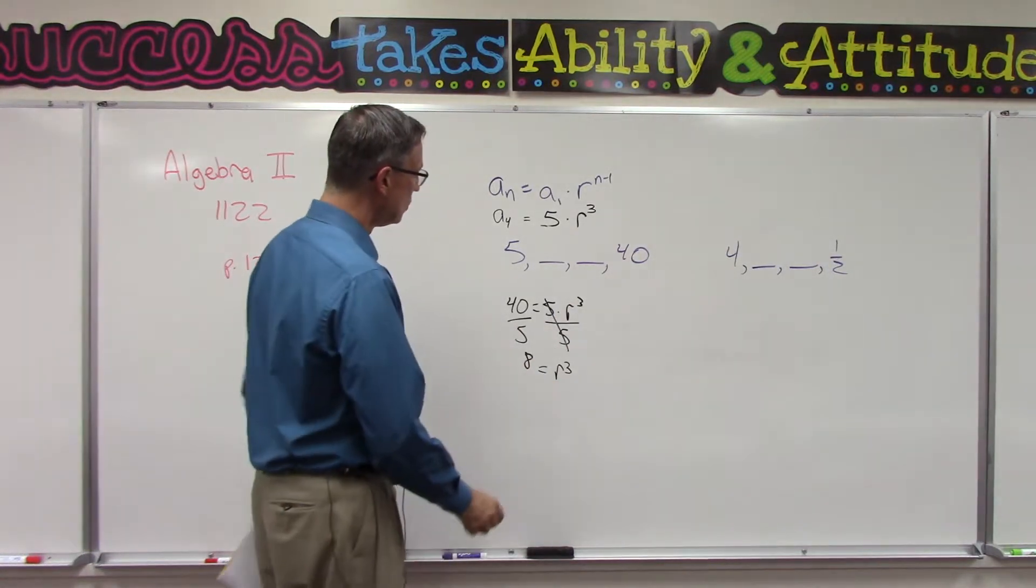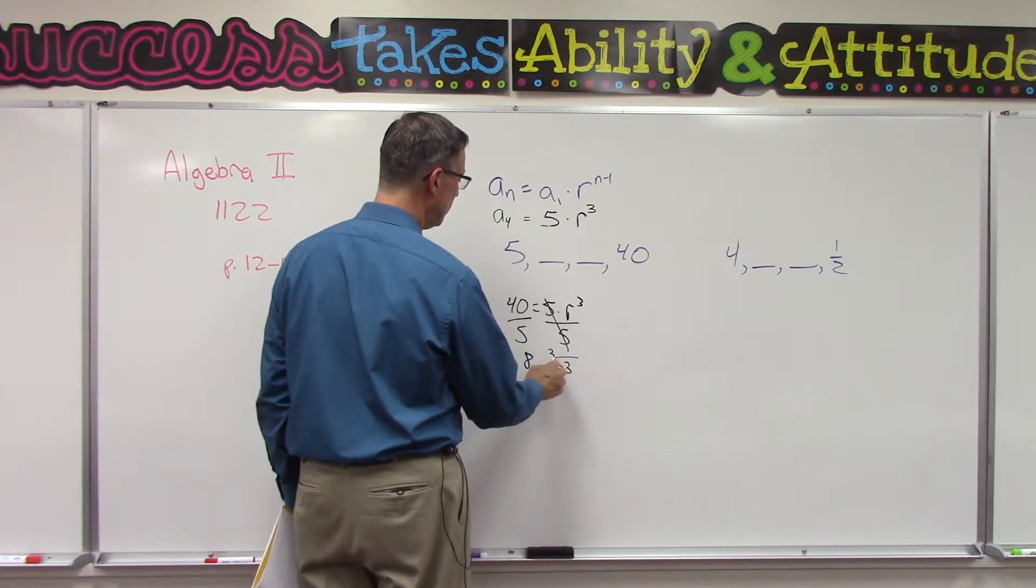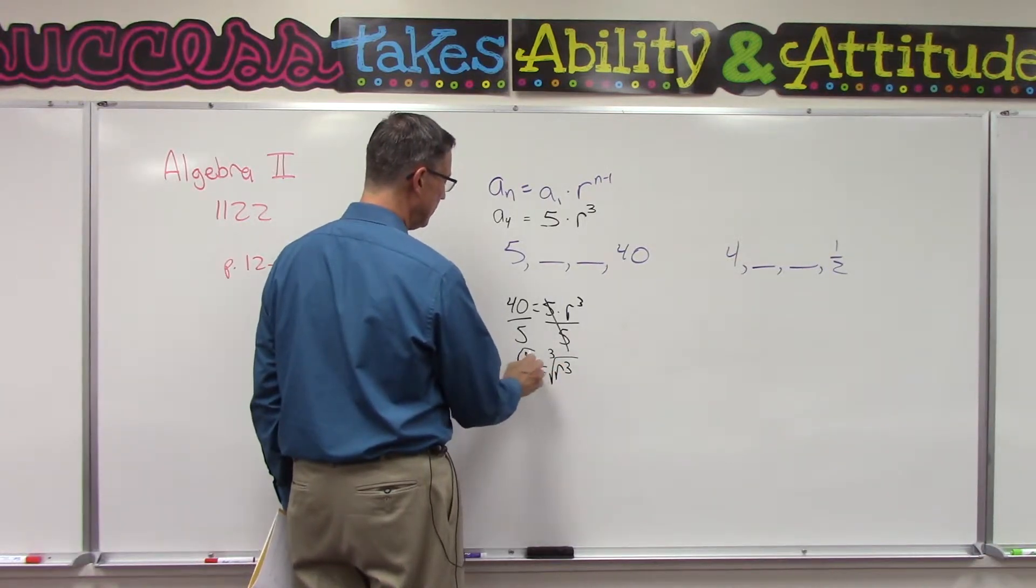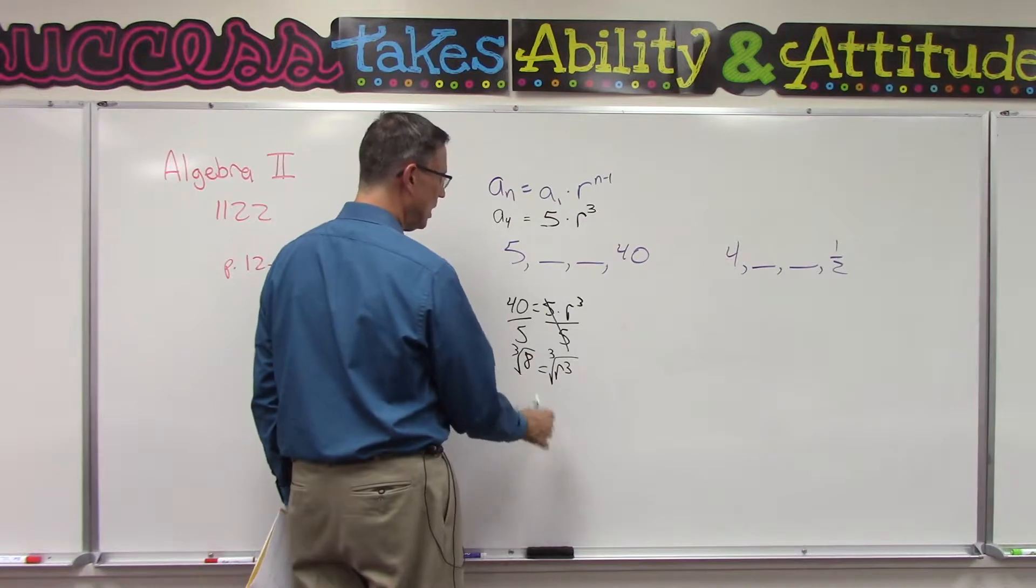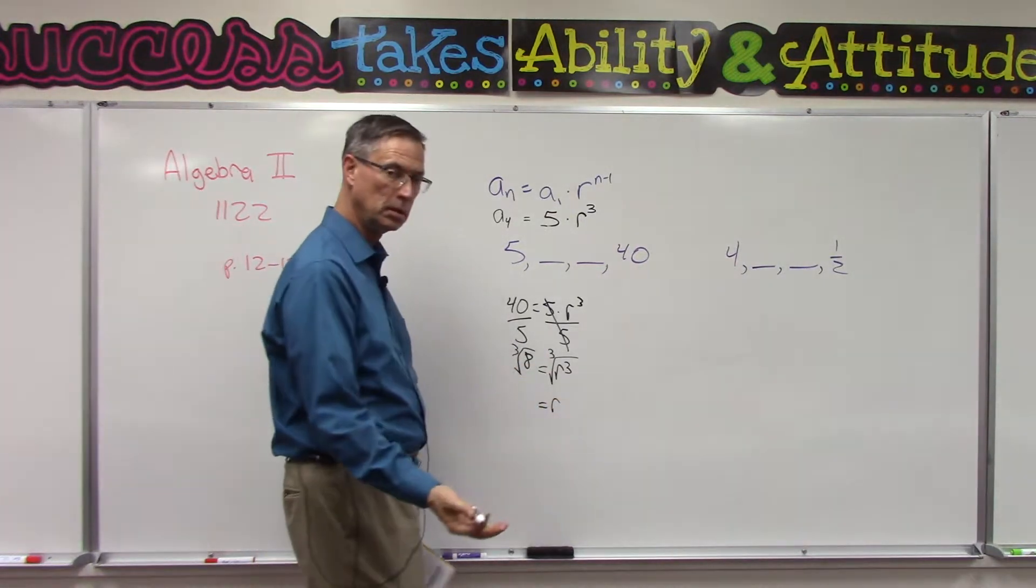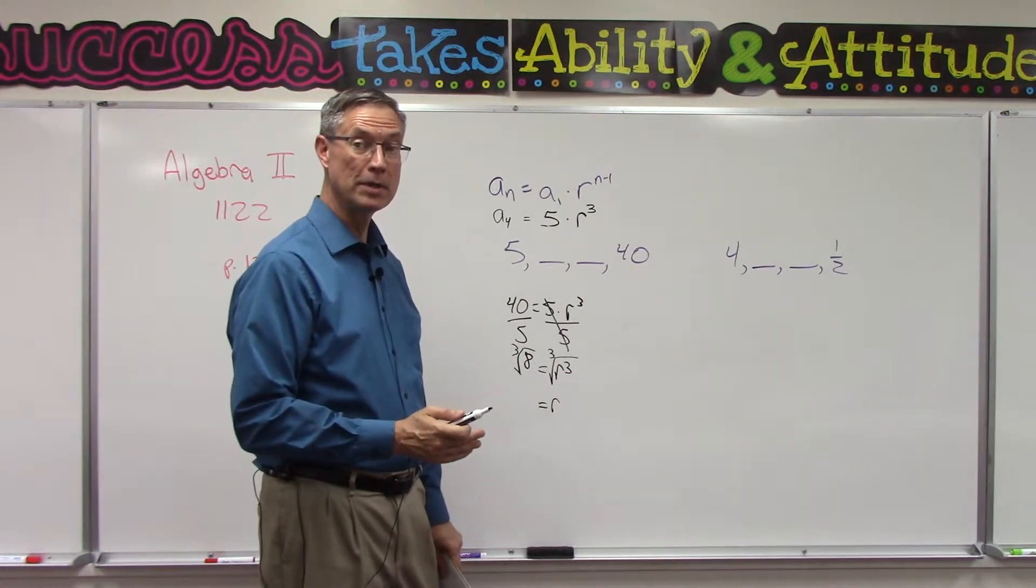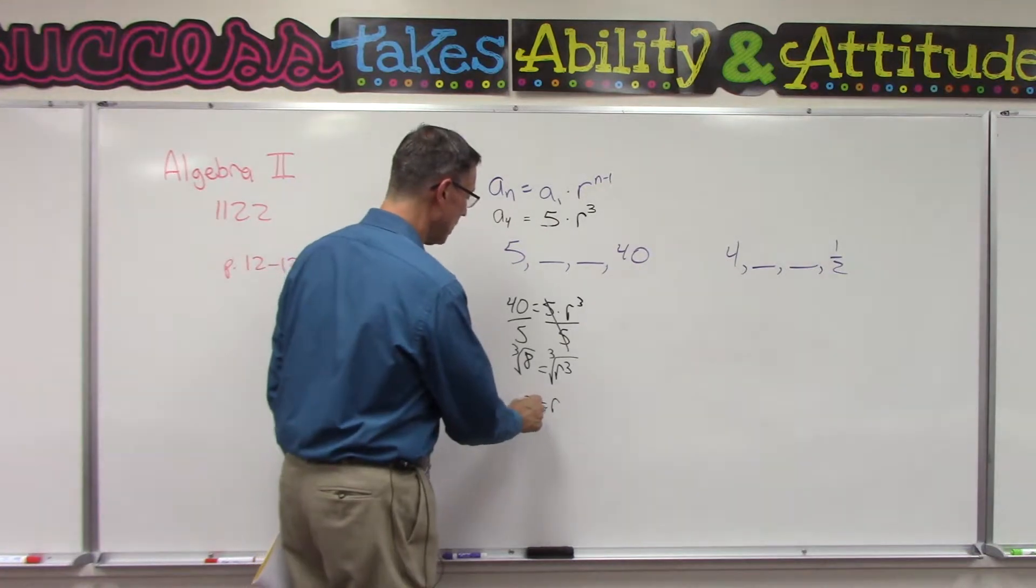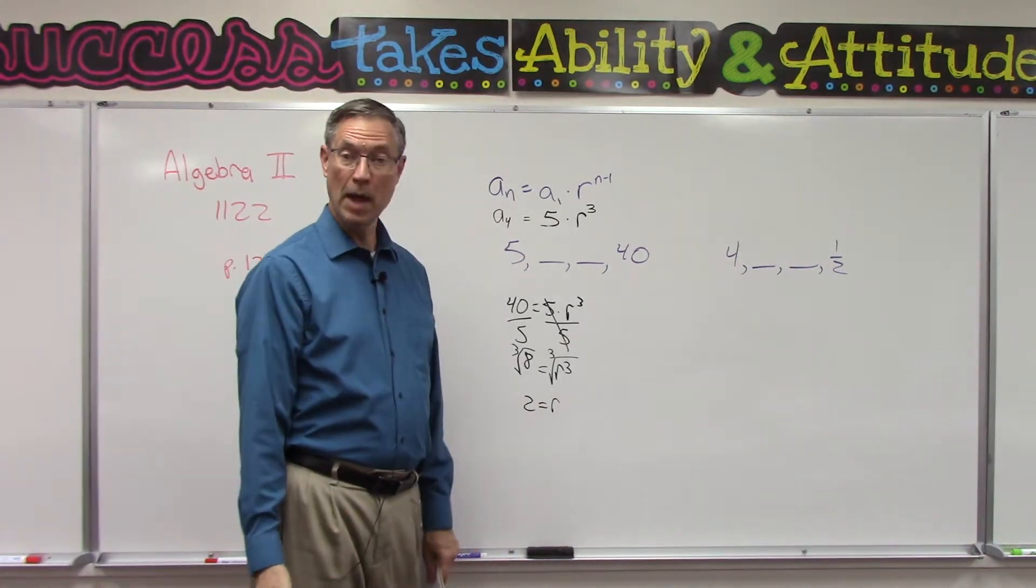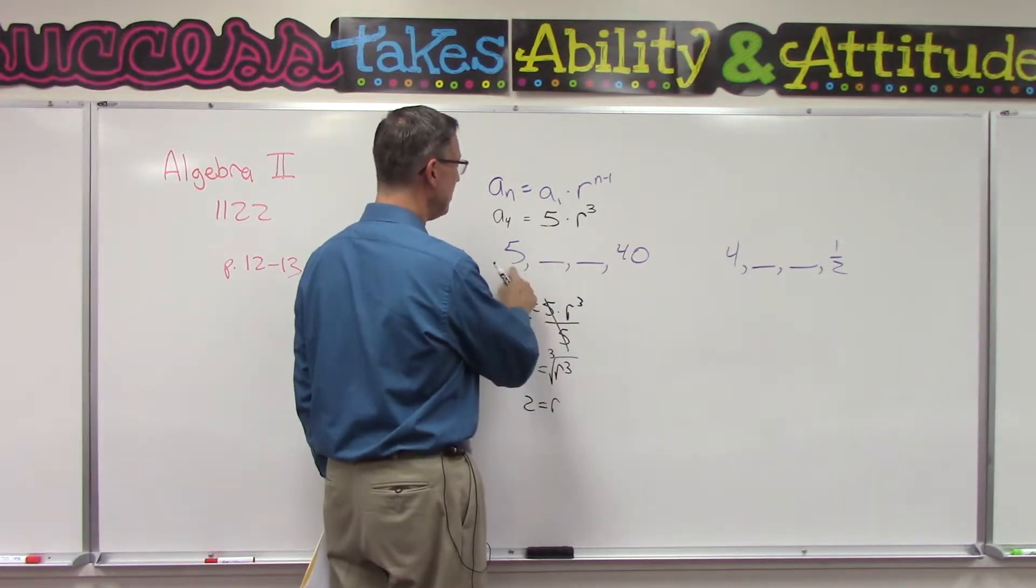So we're doing like the third root of each of these. The third root of r to the third is r, but then you do the same thing to the other side, so the third root of 8 is 2.